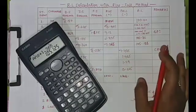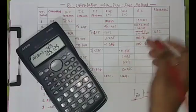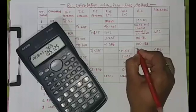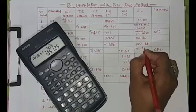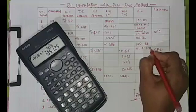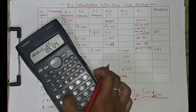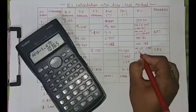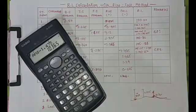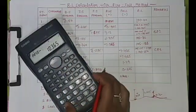This next value is in the fall column, meaning it is negative, so we subtract it from the RL of the last station: 105.125 minus 1.475 = 103.650.